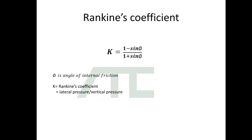So what is Rankine's coefficient? Rankine's coefficient is denoted by K and it is the ratio of lateral pressure to vertical pressure. K equals 1 minus sin phi divided by 1 plus sin phi, where phi is angle of internal friction, and K is Rankine's coefficient.